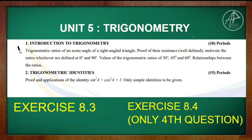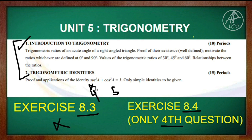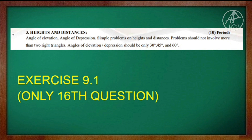Unit 5 is Trigonometry. The chapter Introduction to Trigonometry covers trigonometric identities. Exercise 8.3 is deleted. In Exercise 8.4, question number 4 and question number 1 are deleted. The key topic remaining is the identity sin²A + cos²A = 1. The next chapter is Heights and Distances — the topics are angles of elevation and angle of depression. In Exercise 9.1, question 16 is deleted.